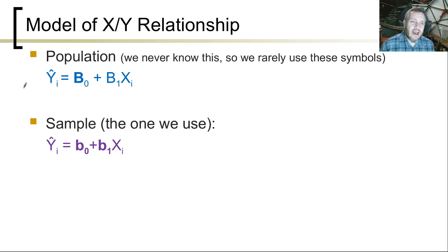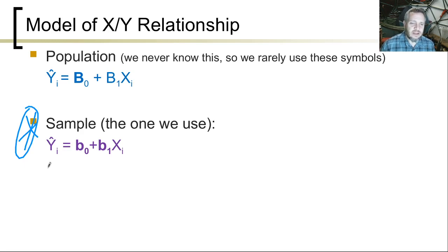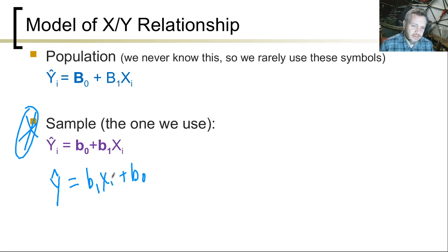The regression line — if we happen to know all the population values we would maybe use capital B's, but we never know the population values, we know the sample values. So this is where we say y-hat equals b0 plus b1 x. Frequently people will rearrange to y-hat equals b1 x plus b0, putting the intercept second. You could put the i's there if you want, but we forget to do them because we know that there are multiple ones. In real stats there are so many different formulas — it's really important to get this notation correct, but this formula we use a million times so we know the i is there.